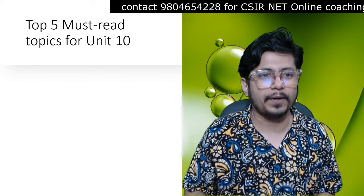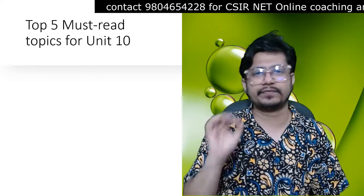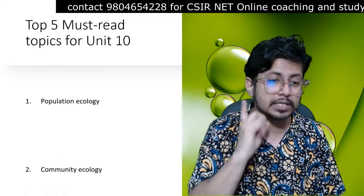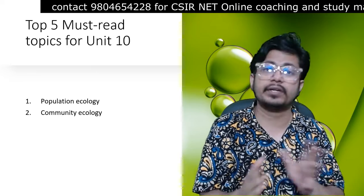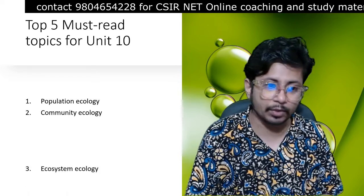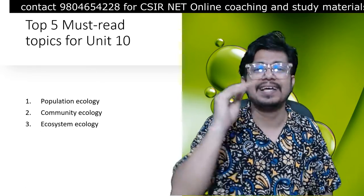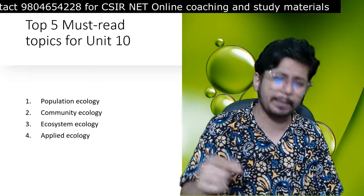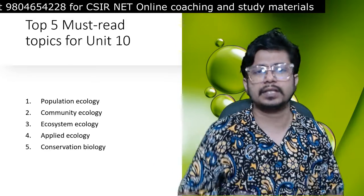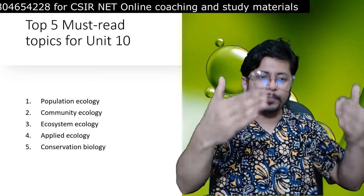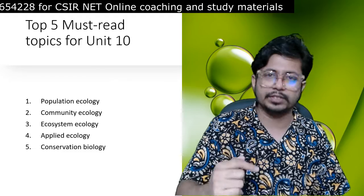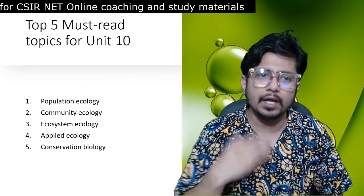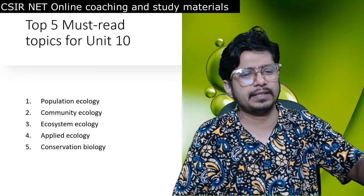The top five must-read topics for Unit 10 are: population ecology, community ecology (including community interactions), ecosystem ecology, applied ecology (which also covers conservation biology), and conservation biology itself. These five topics essentially cover almost the entire Unit 10 syllabus.